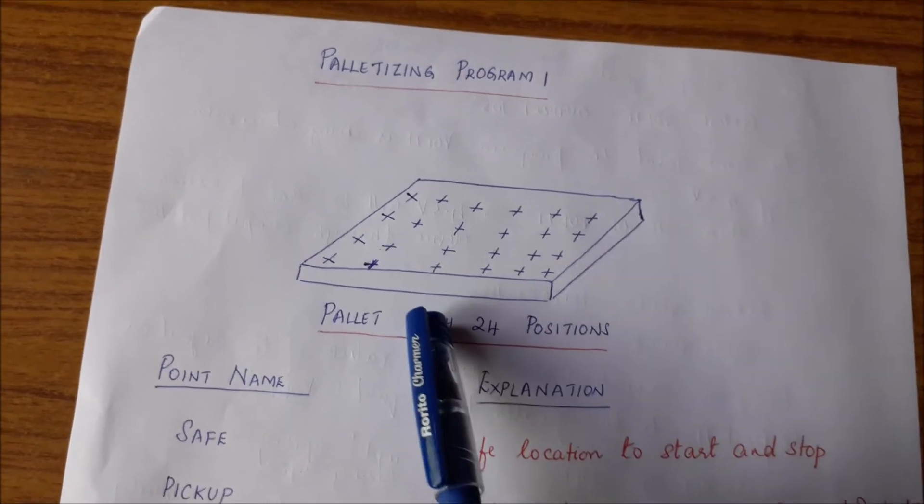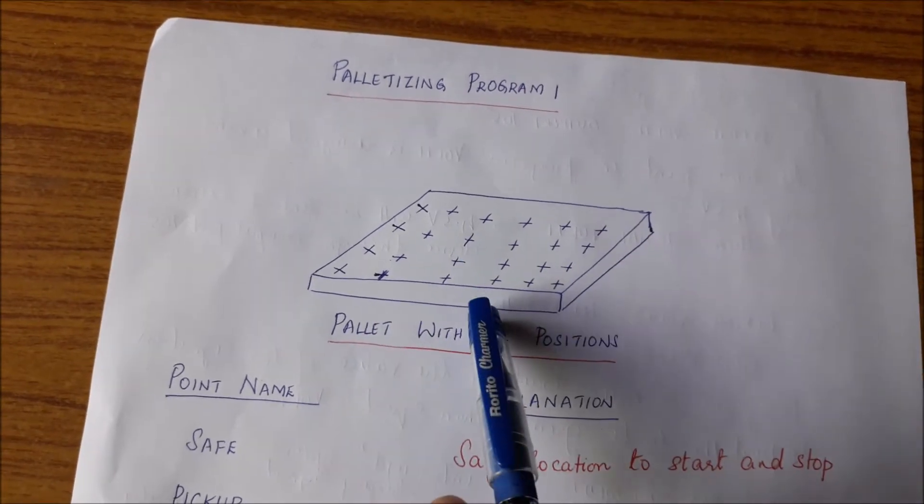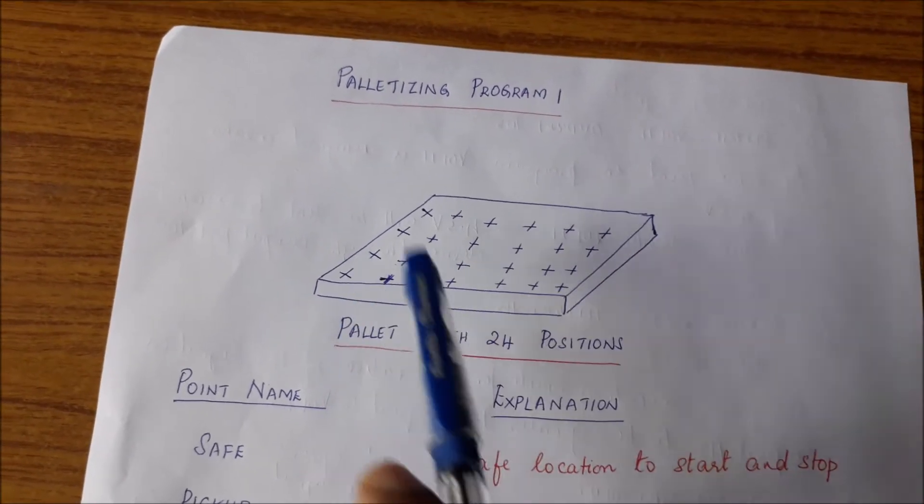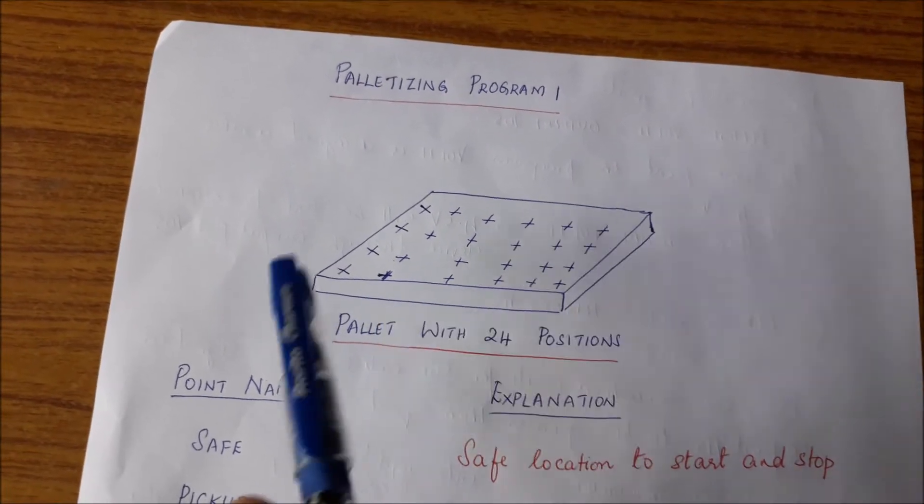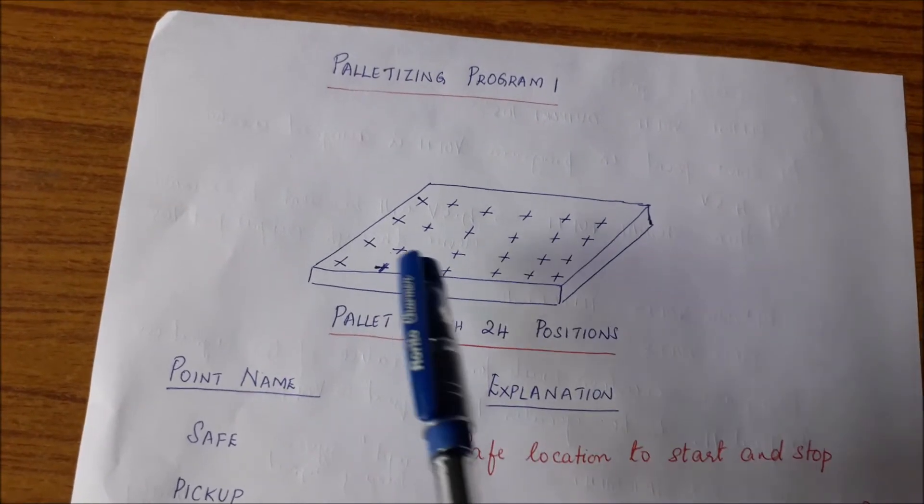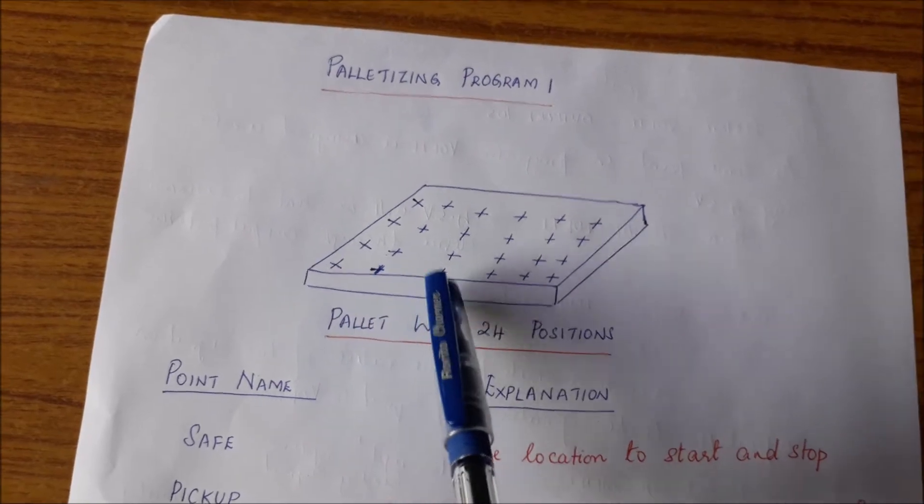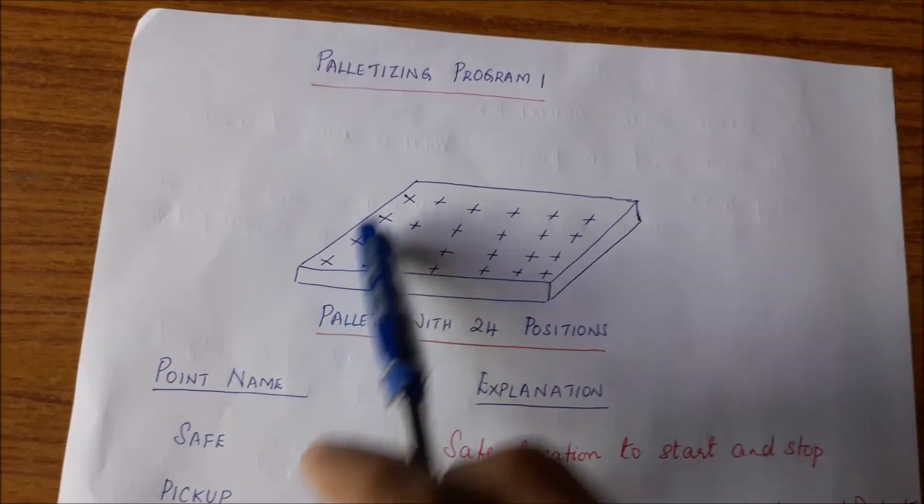Let us assume that a machine is processing parts and those processed parts are available in a shoot. So the robot's task is now to pick up each individual part and place them one by one in the positions that are marked by crosses on this pallet.